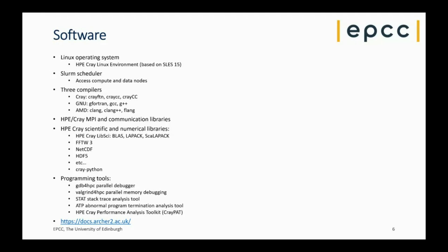We have Cray MPI and communication libraries for parallel applications, and a set of optimized scientific libraries including BLAS, LAPACK, ScaLAPACK, FFT libraries like FFTW, and I/O libraries like NetCDF and HDF5. Cray also provides optimized versions of Python and R installed with some optimization to ensure good performance on the system. For application development there are also debuggers and profilers. There's lots of documentation on the ARCHER2 website and we run training courses specifically on those tools as well.